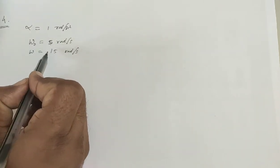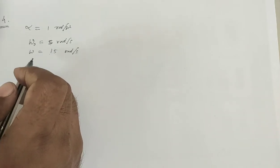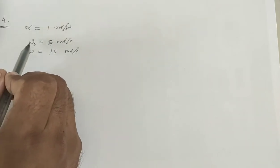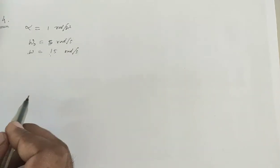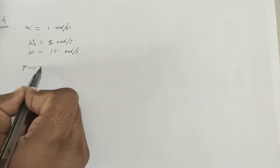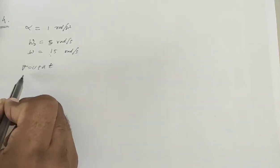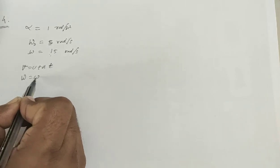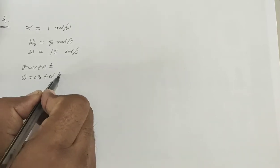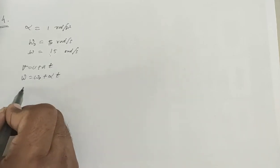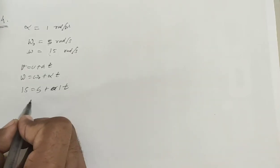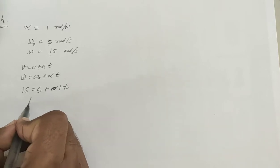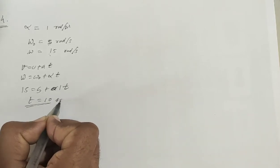We need to find how much angle is obtained when speed goes from 5 to 15 radian per second. We don't know how much time, so first we have to find time. The formula we use is v = u + at, which in angular form is omega = omega naught + alpha times t. So omega is 15, omega naught is 5, alpha is 1, giving t = 10 seconds.